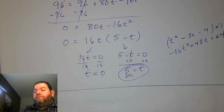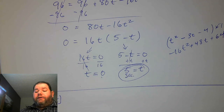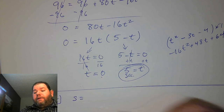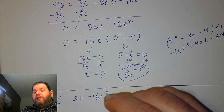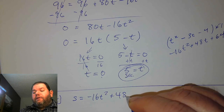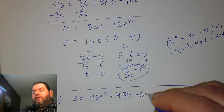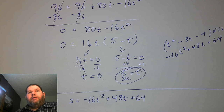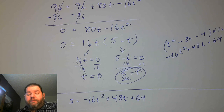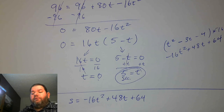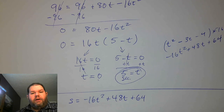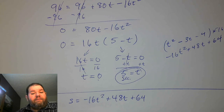We could say our height s is negative 16t squared plus 48t plus 64. This is the scenario where the building is 64 feet tall and the ball is thrown upward with a speed of 48 feet per second initially. Gravity acts on the ball as well, which is what the negative 16t squared indicates. All three pieces come from the physical aspects of a falling object and how gravity influences location.